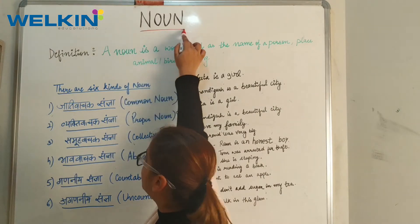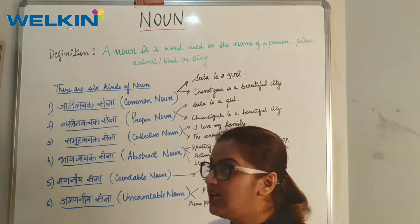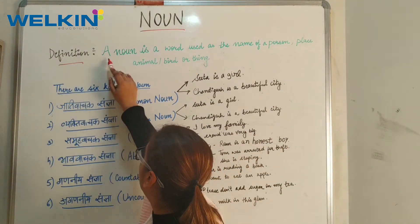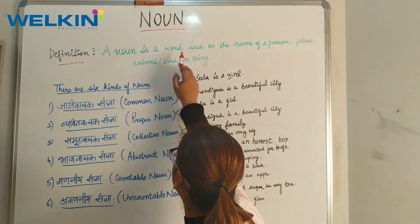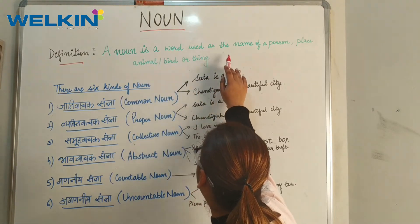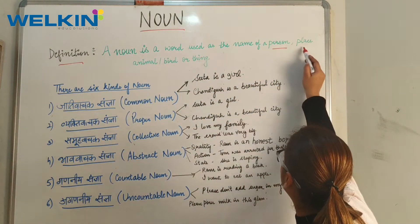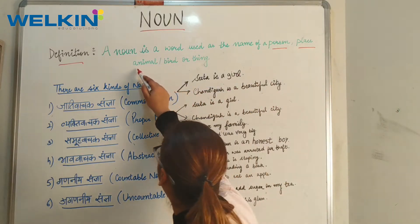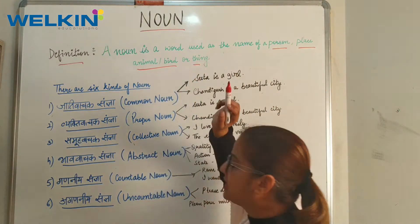Nouns — Nouns is called Sangya. What is the definition? A noun is a word used as the name of a person, place, animal, bird, or thing.